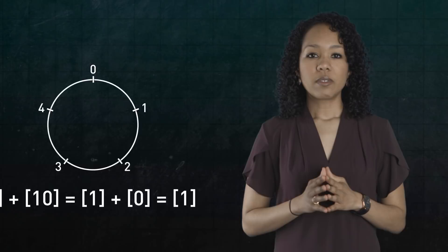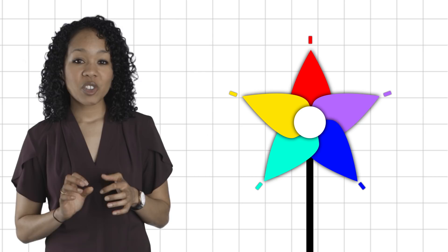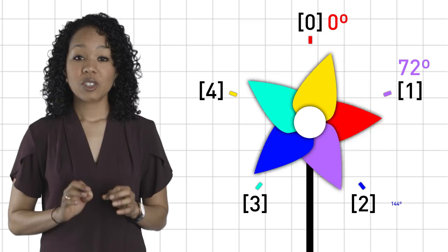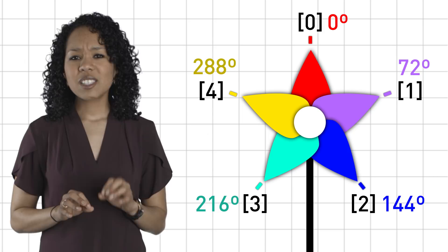For example, 1 plus 10 is 1. We can also see this visually. Here's a pinwheel with 5 blades. Its rotational symmetry is encoded by the elements of z mod 5z. 0 represents a rotation by 0 degrees. 1 is a rotation by 72 degrees. 2 is a rotation by twice that, or 144 degrees, and so on.